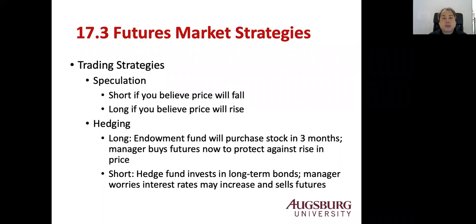The third part of chapter 17 is the futures market strategy. There are two big market strategies: speculation and hedging. This is always true for derivative securities. Speculation is fairly simple — you take a short position if you believe the price will fall.